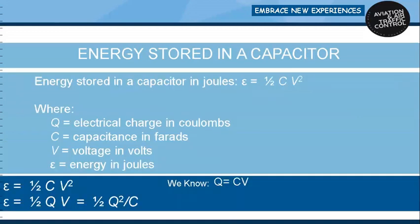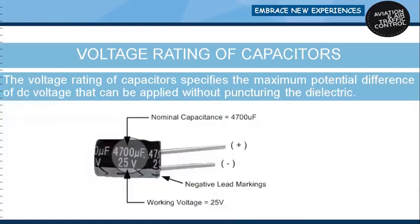Energy stored in a capacitor in joules equals ½CV², where Q is electrical charge in coulombs, C is capacitance in farads, V is voltage in volts, and E is energy in joules. Since Q = CV, we can rewrite the energy equation as E = ½QV, or E = Q²/(2C). The voltage rating of a capacitor specifies the maximum potential difference of DC voltage that can be applied without puncturing the dielectric.